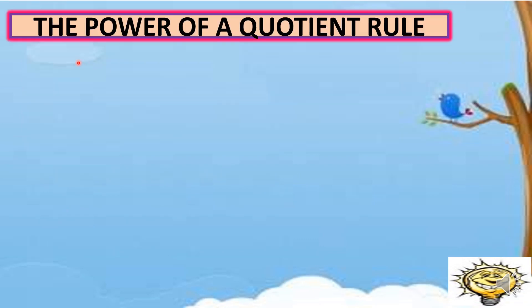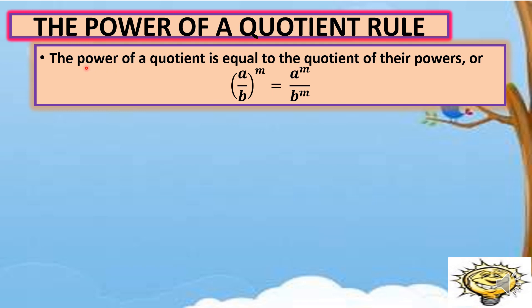We also have the so-called power of a quotient rule. In this rule, the power of a quotient is equal to the quotient of their powers. Or in symbol, quantity a over b raised to m is equal to a raised to m over b raised to m. We're going to use the exponent outside to apply to the exponents of our numerator and denominator.